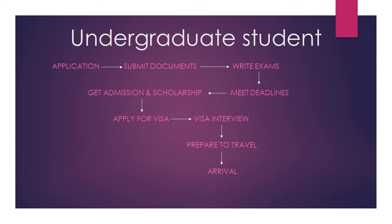This is a simple flowchart of the entire application process for an undergraduate student to any institution in the United States. You apply and pay the application fee where necessary, you submit the required documents, you register for your exams, prepare for the exams, write your exams, and ensure they reach the school on time so you meet your deadlines. The decision process is then taken by the school.